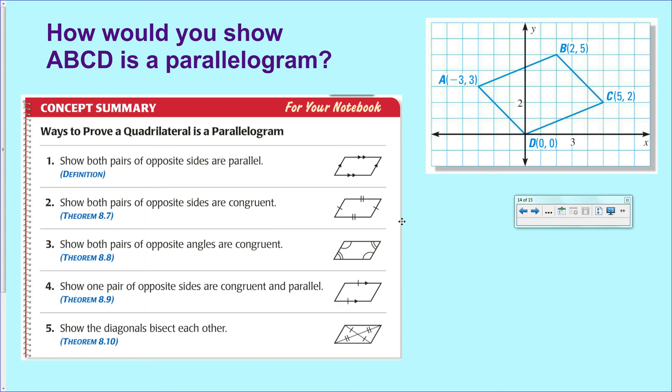Number two, you could show that the opposing sides are equal in length. To do that, you'd have to do distance formula. You'd have to do it for each segment, so you'd have to do distance formula four times. A lot of work, but you could do it.